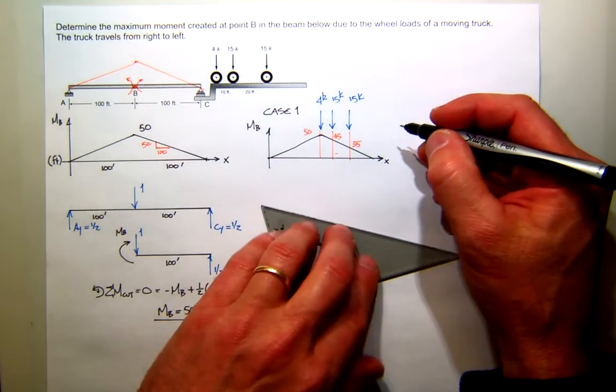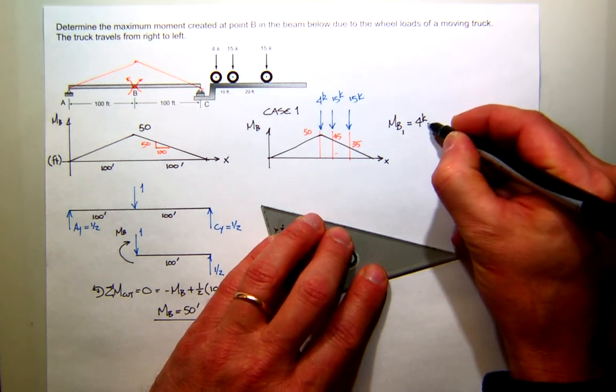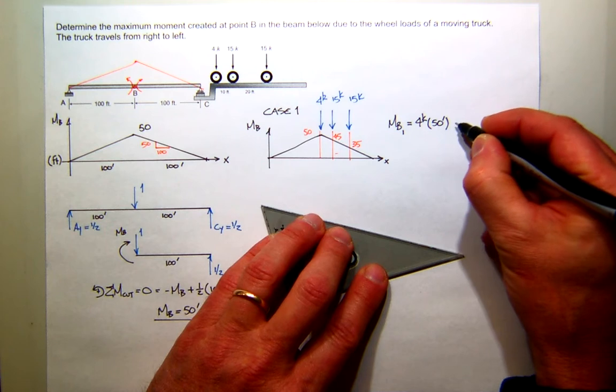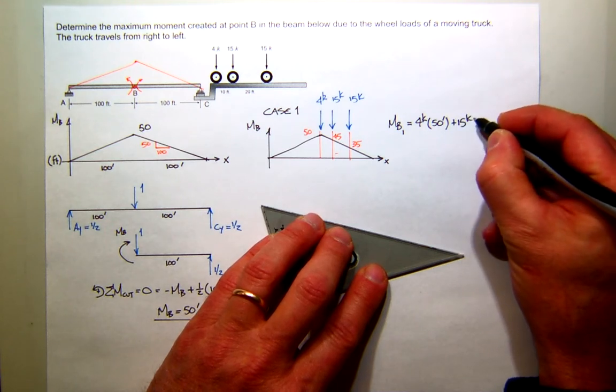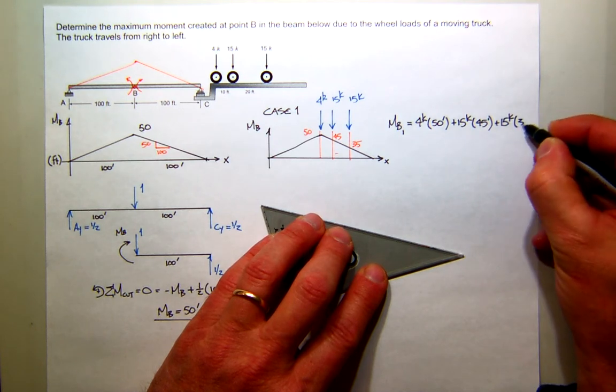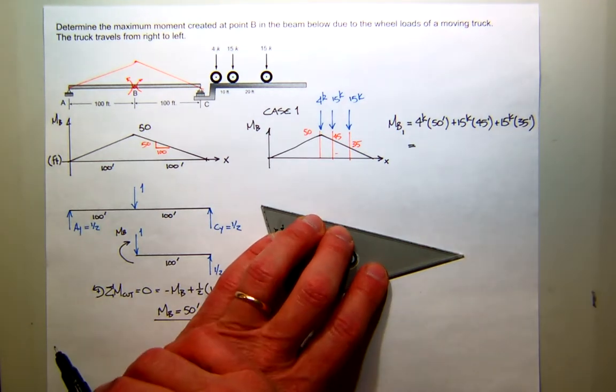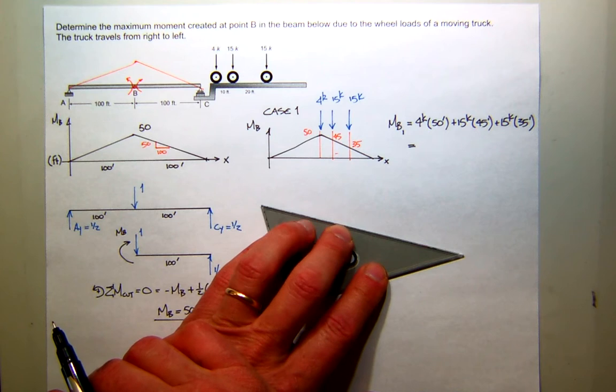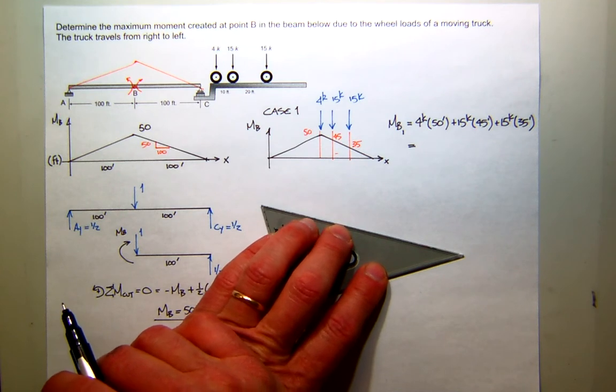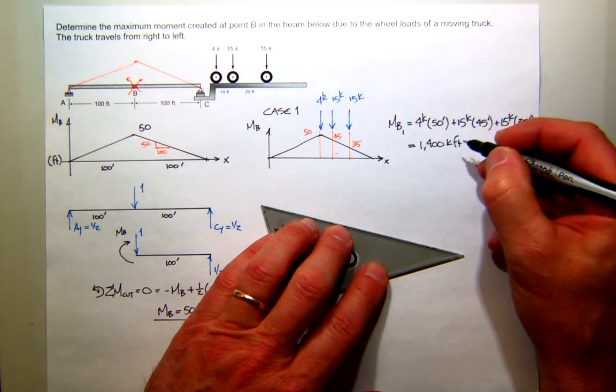Now the first case, then, the moment at B, I'll call it 1, will be 4 kips times 50 feet, plus 15 kips times 45 feet, plus 15 kips times 35 feet. What's that equal to? Calculators. Anybody? 1,400. 1,400? Can I get a verification? 1,400. That's 1,400 kip feet. All right.